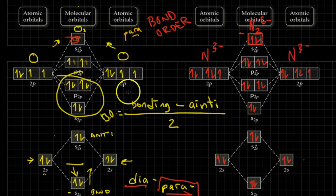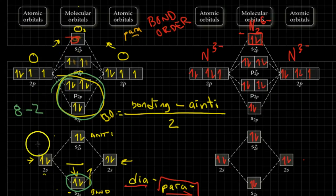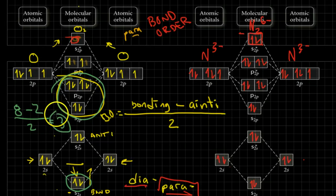So what that means is, let's look at this one right here. How many bonding do I have? Well, I've got two, four, six, eight, minus one, two. I divide that by two. So six divided by two is three. That's my bond order for an O2 molecule.